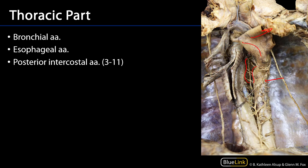Just inferior from this we can see two of our bronchial arteries. These are in all likelihood left bronchial arteries. The right bronchial artery is not visible here — more often than not it's generally a branch of that third right posterior intercostal artery or the superior left bronchial artery.